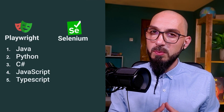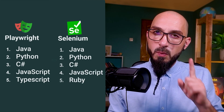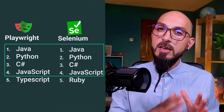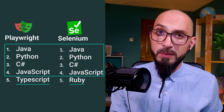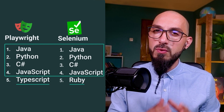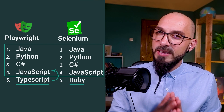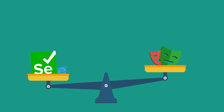Next on our list is the official supported languages, or as they call it, language bindings. Playwright supports Java, Python, C#, JavaScript, and TypeScript, while Selenium supports Java, Python, C#, JavaScript, and Ruby. Each has one additional supported language. Although, to be fair, it's hard to call TypeScript a full-fledged language, as it's a superset of JavaScript. So let's give the shiny Ruby badge to Selenium as well.